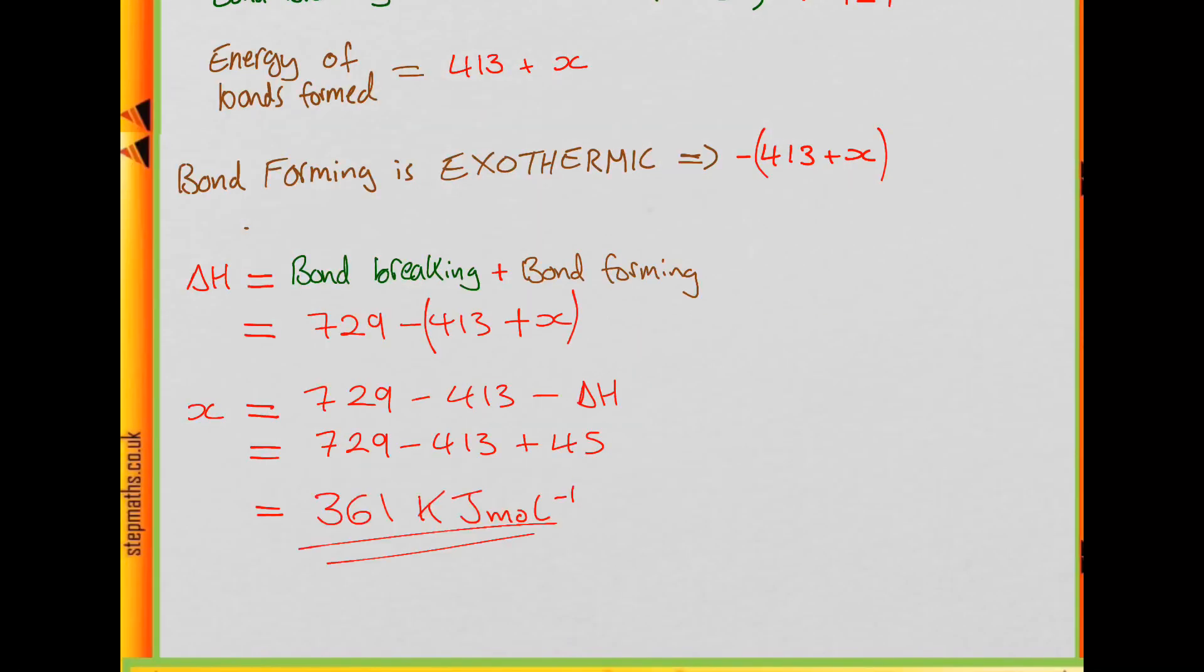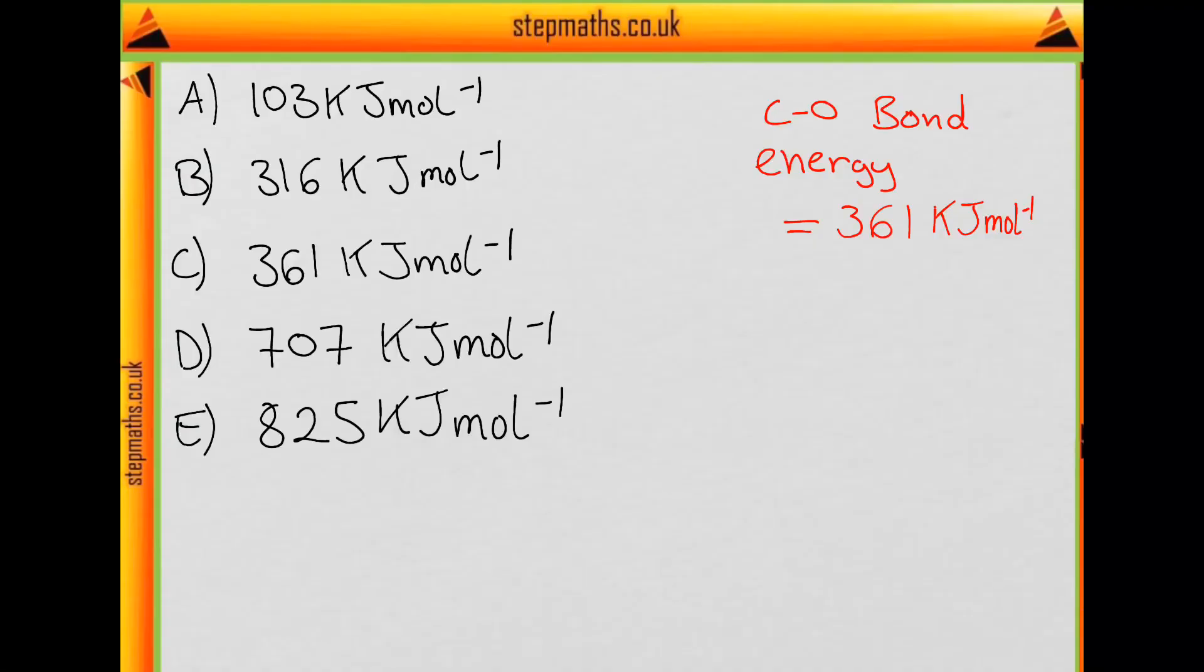And that gives us the bond energy of the C-O bond as 361 kJ per mole. So looking at our list of options we can see that the correct answer is C.